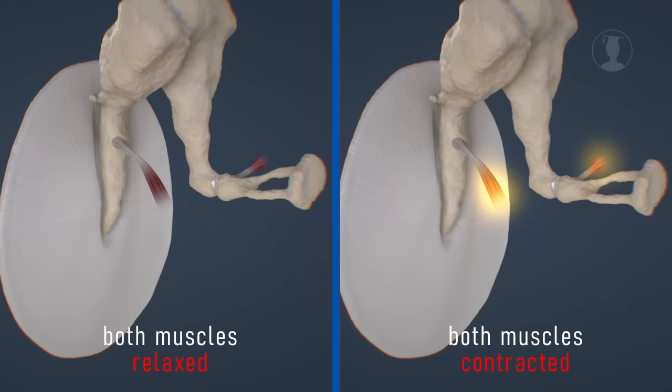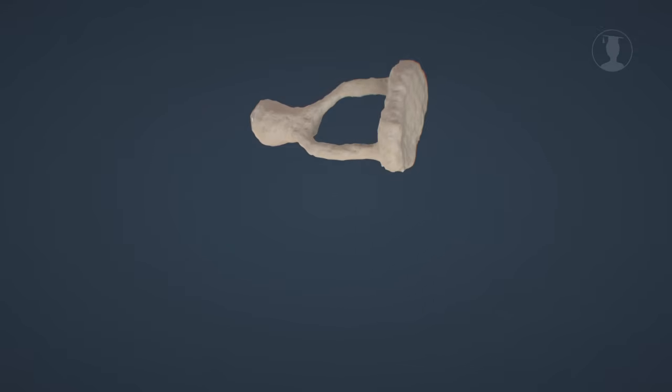Let's now take a look at the areas that the stapes causes to vibrate as a result of its movements. The stapes is connected to the cochlea via the oval window.